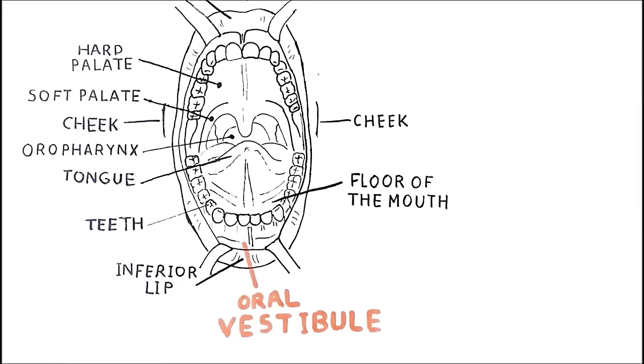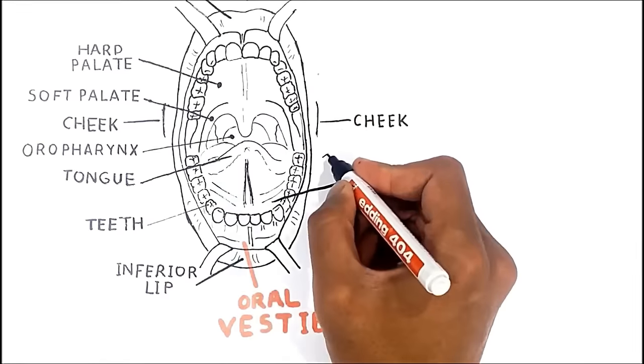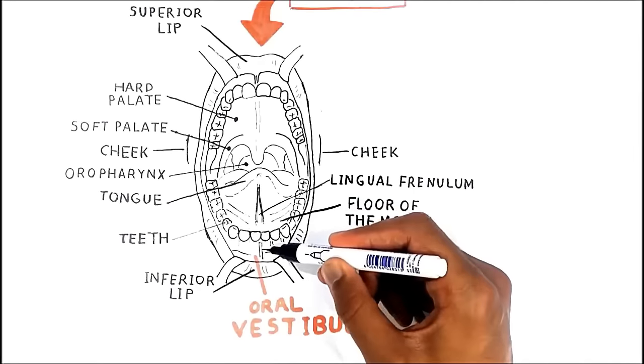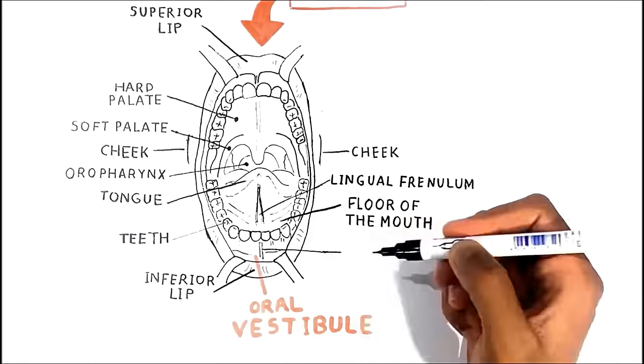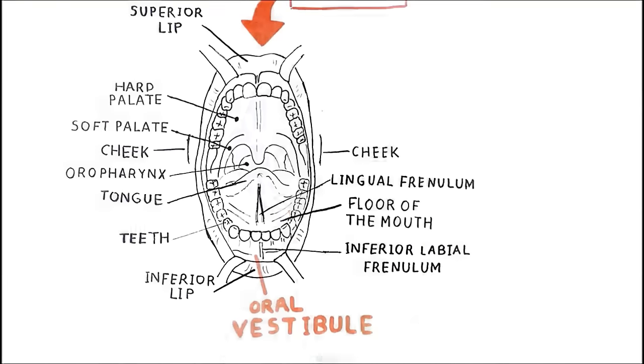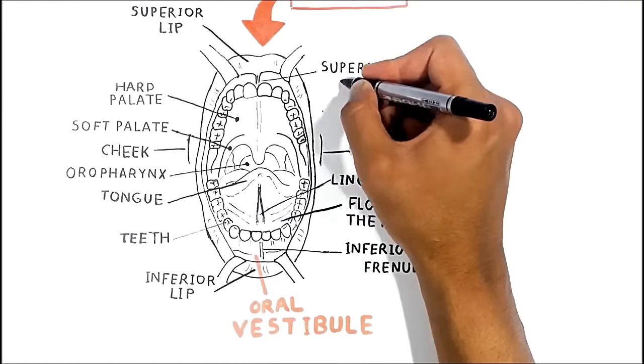Returning to our previous diagram, it is important to note that the floor of the mouth is connected to the tongue by the fold of oral mucosa which is known as the lingual frenulum. The little bridle of the lower lip is called the inferior labial frenulum. It is also presented in the upper lip and is called superior labial frenulum.